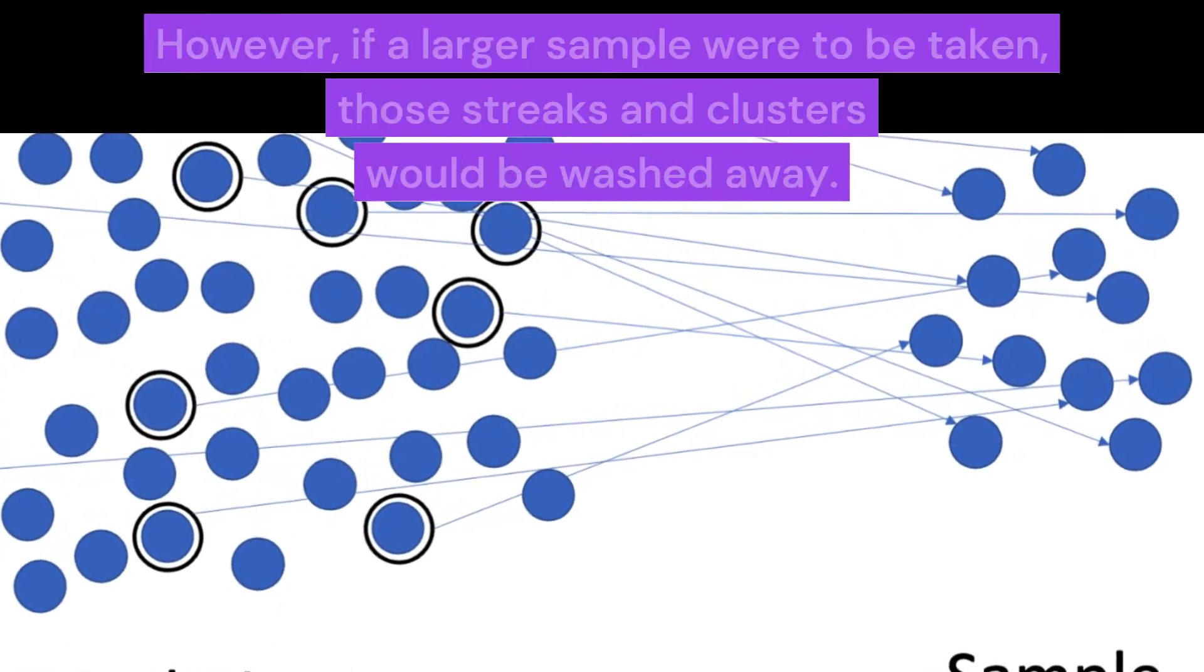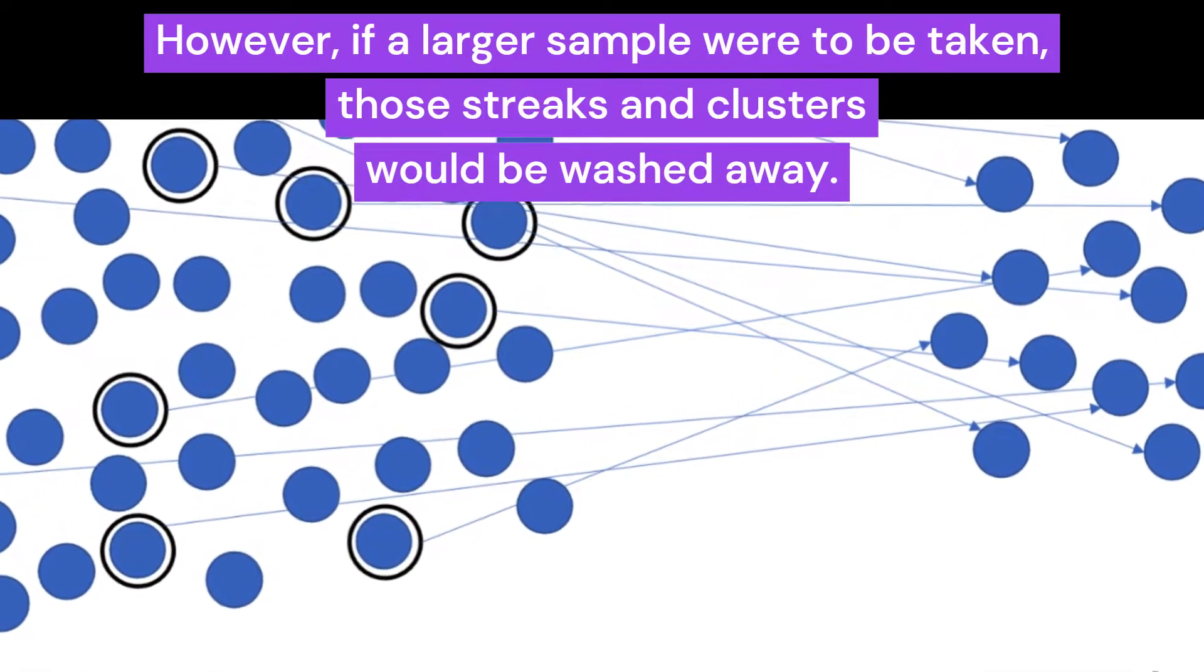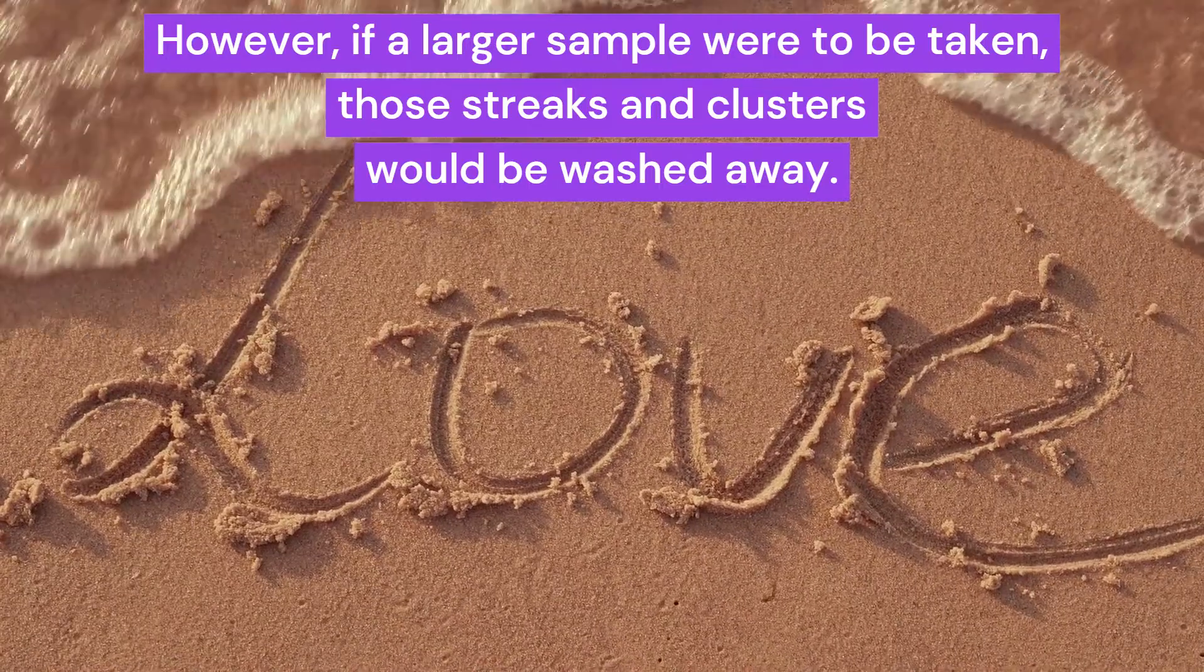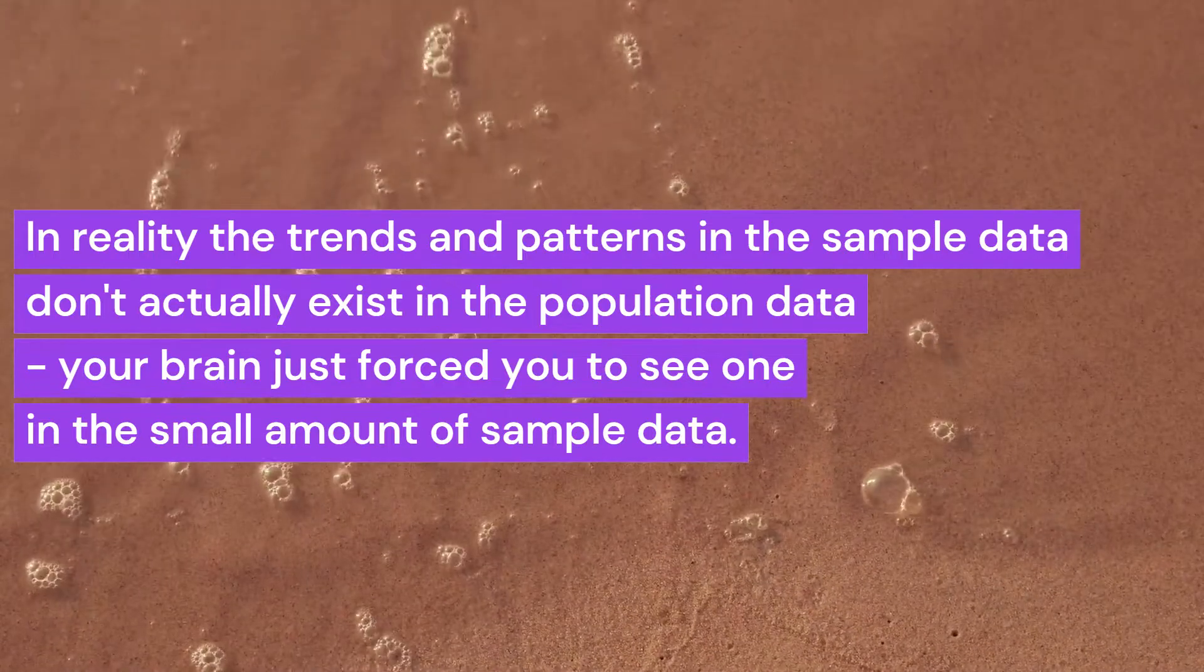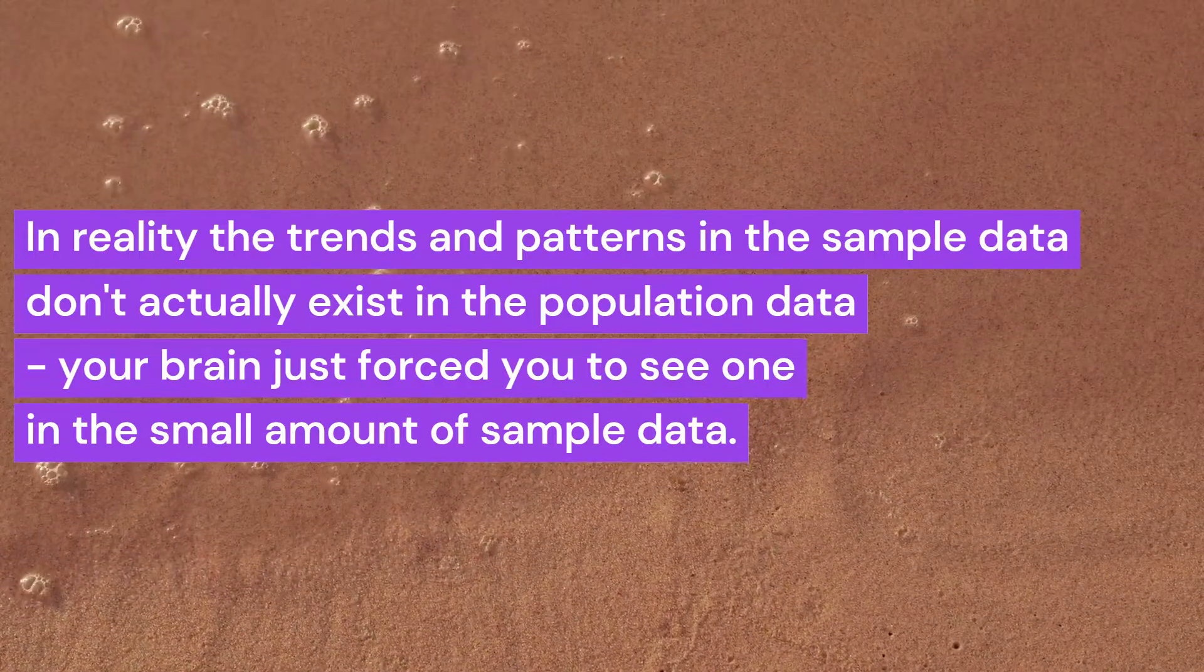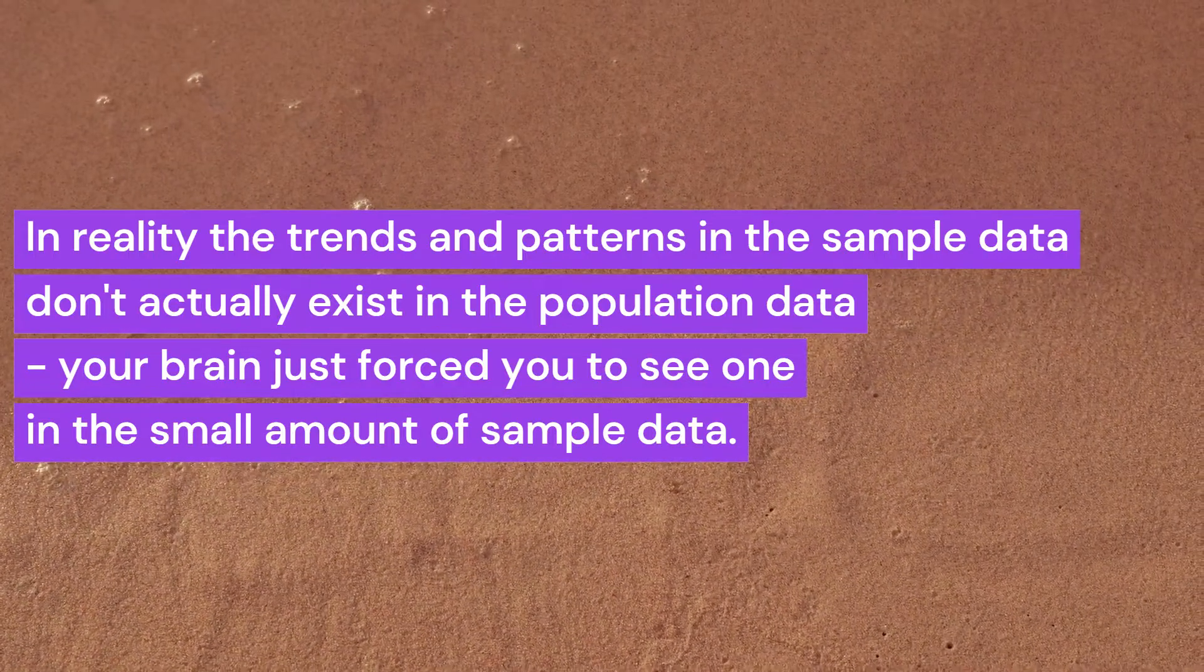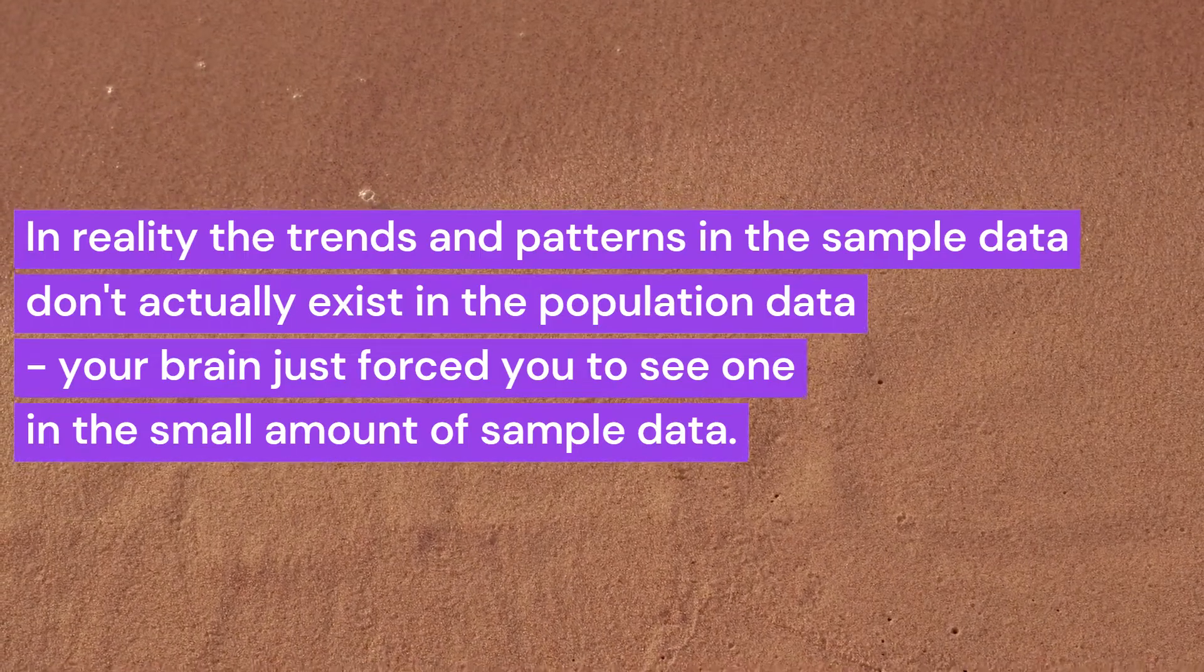However, if a larger sample were to be taken, those streaks and clusters would be washed away. In reality, the trends and patterns in the sample data don't actually exist in the population data—your brain just forced you to see one in the small amount of sample data.